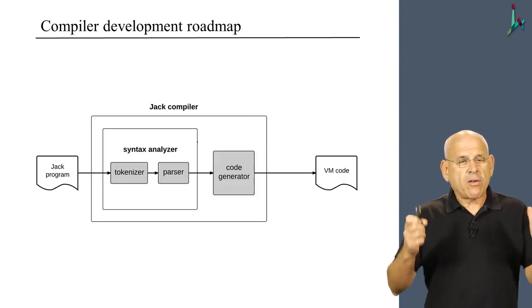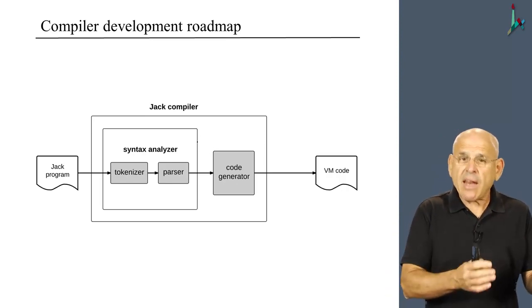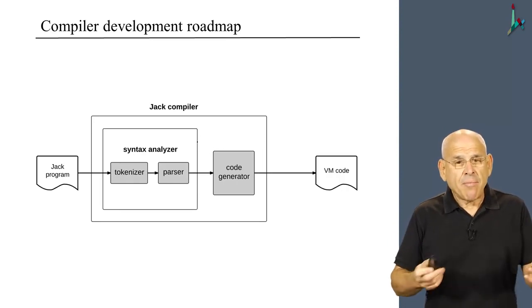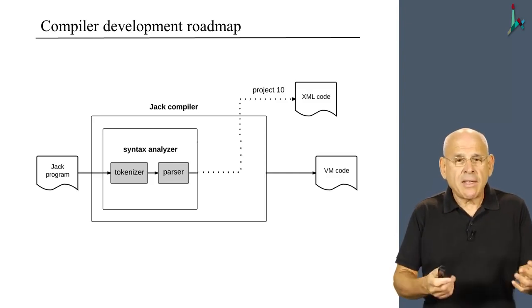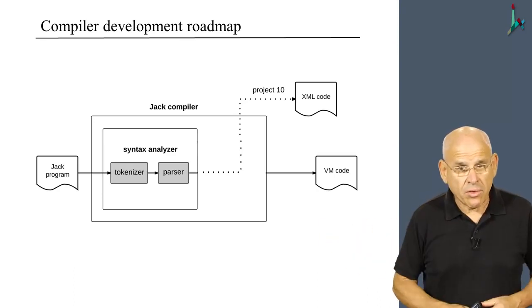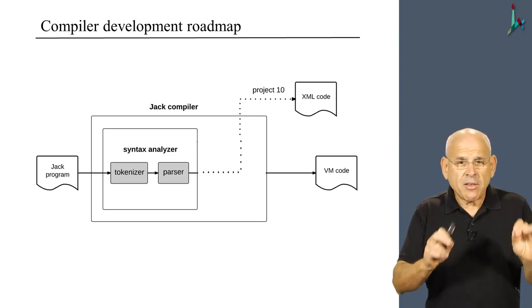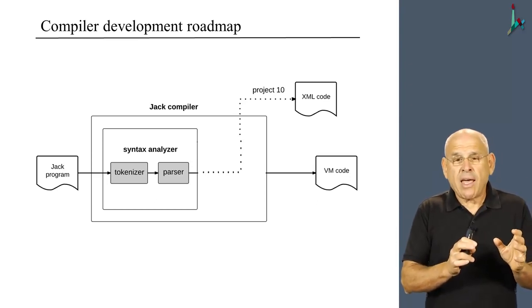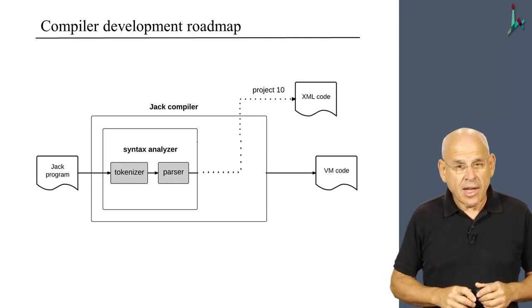We decided to split the construction of this compiler into two well-defined modules, a syntax analyzer and a code generator. Now the syntax analyzer is something that we already developed in the previous modules. And in order to test it, we decided that the syntax analyzer will emit not VM code, but rather XML code. And the purpose of this exercise was just to verify that the parser understands the source code and is capable of demonstrating this understanding by producing legible XML code.